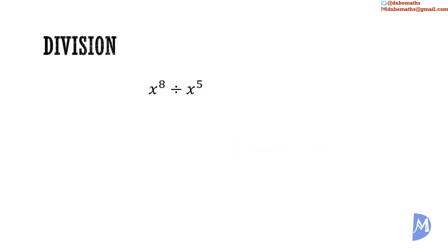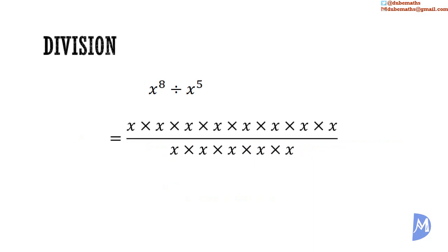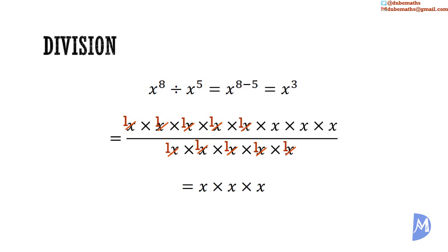Division. Consider x to the 8th power divided by x to the 5th power — that is x being multiplied 8 times divided by x being multiplied 5 times. Cancelling, we get x multiplied by x multiplied by x, which is x to the 3rd power. So x to the 8th power divided by x to the 5th power is equal to x to the 3rd power. But 8 minus 5 is equal to 3.